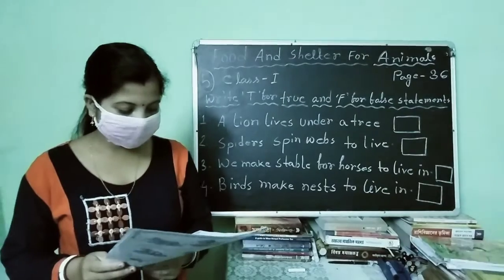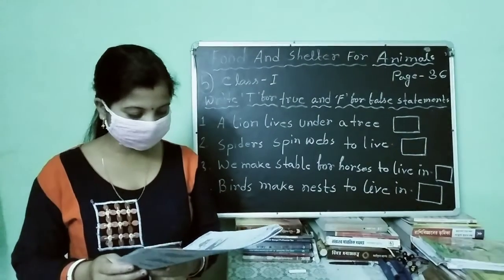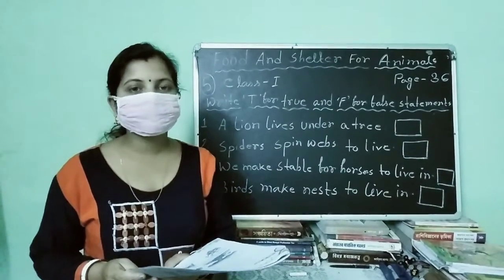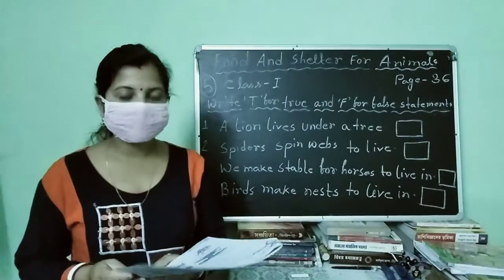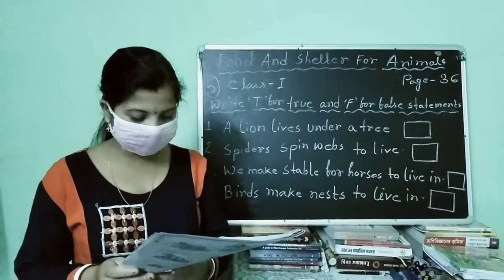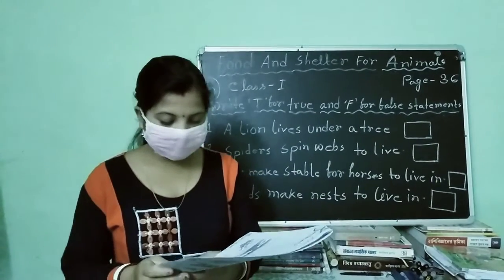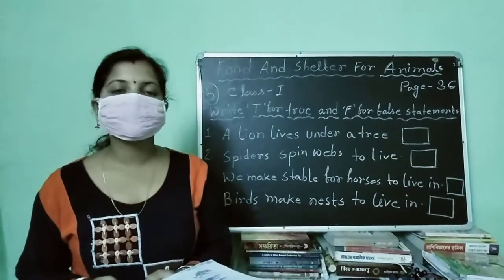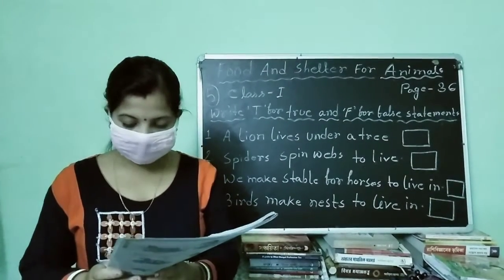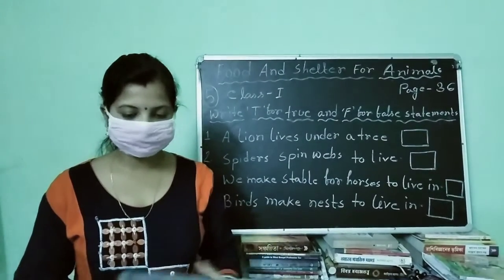Animals that make their own homes: birds live in a nest, bees make a hive to live, a spider spins a web, and a rabbit digs a burrow.